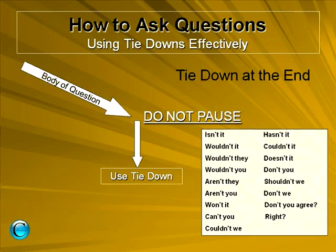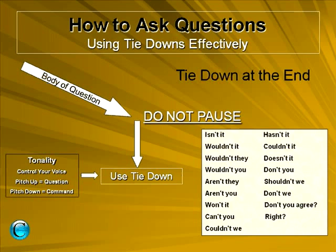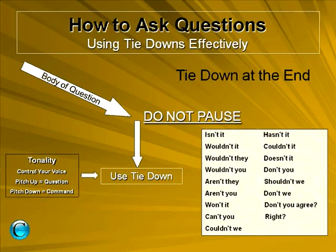So we start out with our question and we tie it down. What's important to note here in all of these tie-downs, but especially at the end, is the tonality — the control and tone of your voice. It is a huge component in the way we all talk and especially the way our customers hear us. If you lift your voice pitch up at the end of the sentence using the tie-down, it is more of a question — it's heard as a question by the customer.